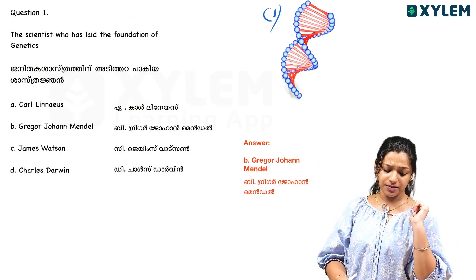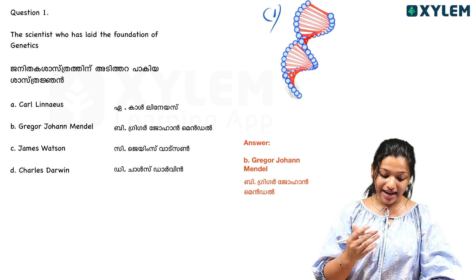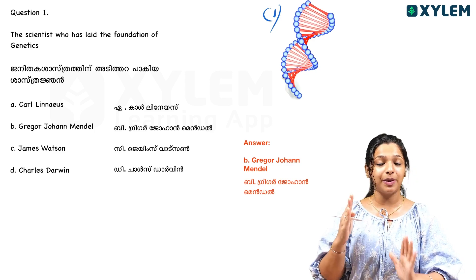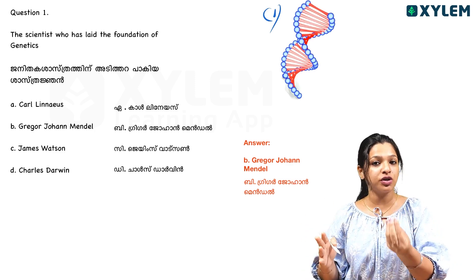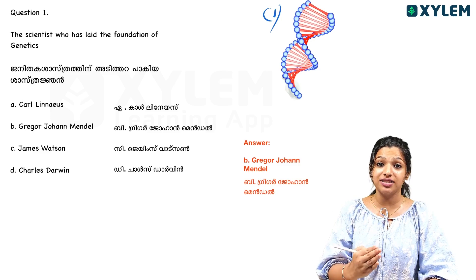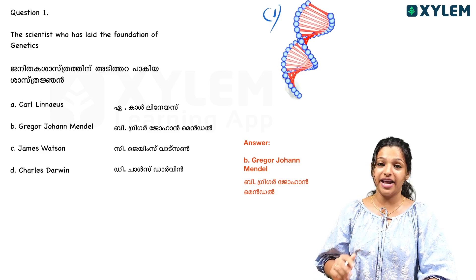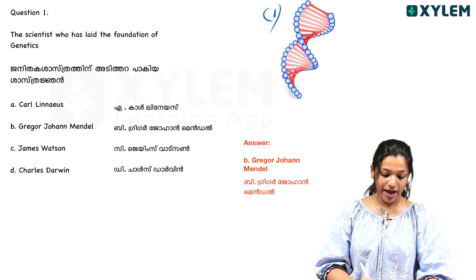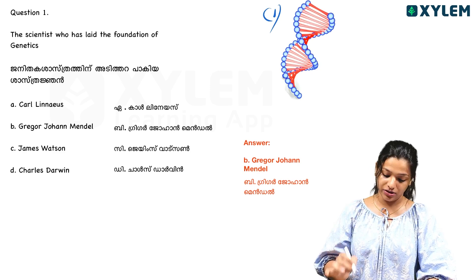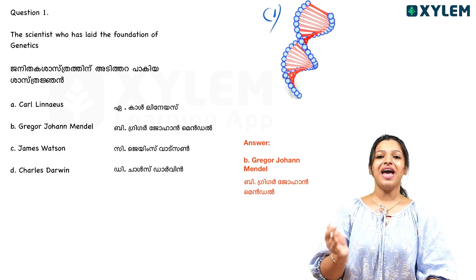The scientist who has laid the foundation of genetics — we need to know the name of this scientist. The options are: Gregor Johan Mendel, James Watson, Charles Darwin. We call him the father of genetics — Gregor Johan Mendel. So the answer is option B.